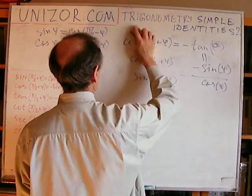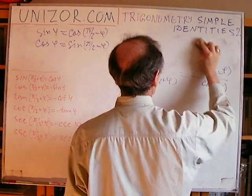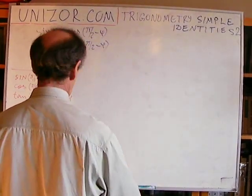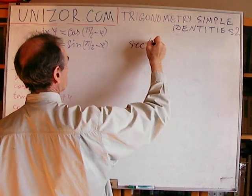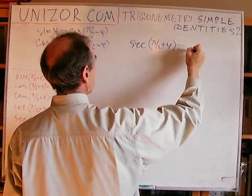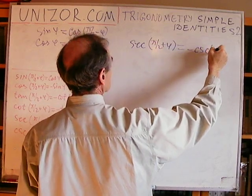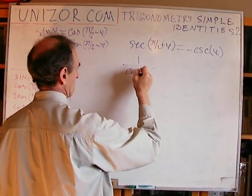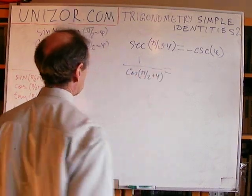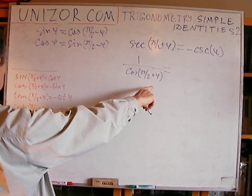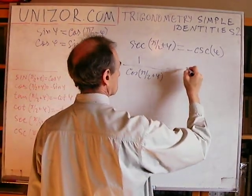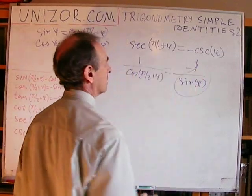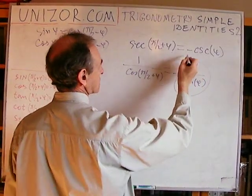A couple more. Exactly the same way, using the definition and the previously proven identities. Secant of phi over 2 plus phi is equal to minus cosecant of phi. What's the definition of secant? 1 over cosine. Now, cosine of phi over 2 plus phi is minus sine. So it's minus sine of phi. What is 1 over sine? It's a cosecant and a minus sign. So that's equality.